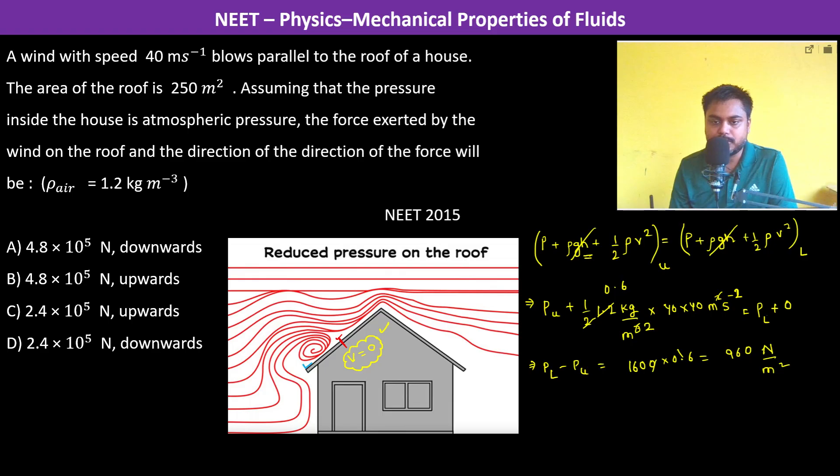So therefore the force is going to be 960 Newtons per meter squared into 250 meters squared. Multiply by 4 divided by 4, so this is 1000. So this is 240, so this is 240 into 1000. So this is around 2.4 times 10 to the power 5 Newtons.